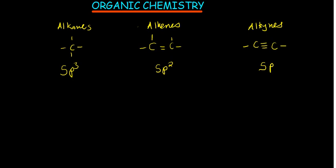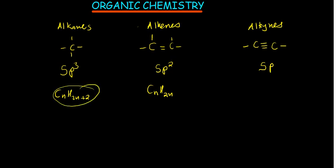Now let's understand the formulas. Alkanes have the general formula CₙH₂ₙ₊₂, alkenes have CₙH₂ₙ, and we'll cover alkynes shortly. The simplest alkane has one carbon: C₁H₄, which is CH₄.